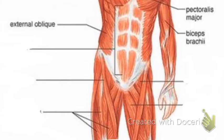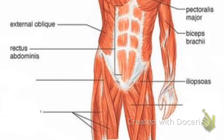External oblique allows you to rotate your torso. Rectus abdominis stabilizes your spine — those are your ab muscles. Iliopsoas are your hip flexors; it's what brings your femur closer to your stomach when you lift your leg to walk or run. Adductor longus helps you rotate your leg — your entire leg.